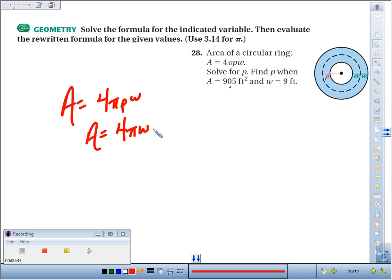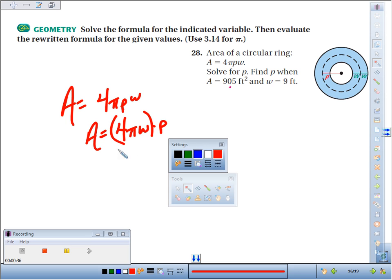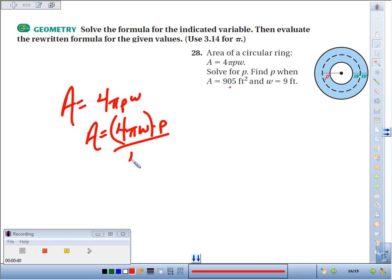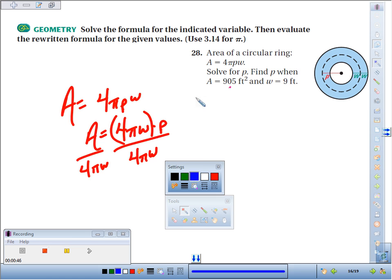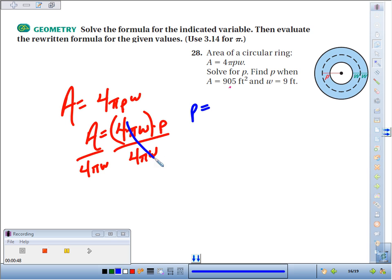If I want to solve for P, I need to divide by this big chunk, this 4πW. If I divide one side, I have to divide the other side. So now I've got my equation for P: P equals area divided by 4 times π times W.